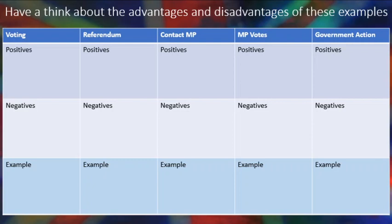I would like you to have a little think and draw a table. I want you to look at five key areas: voting, referendums, contact with the MP, MPs voting in Parliament, and the government acting on things. Think about the advantages of the way that system works — write down some positives about the fact that we have governments and ministers making decisions on a day-to-day basis — but also what are some of the negatives? You might want to include some examples. I reckon you should probably give about ten minutes to this task, and make sure that you do it in detail. Pause the video here.